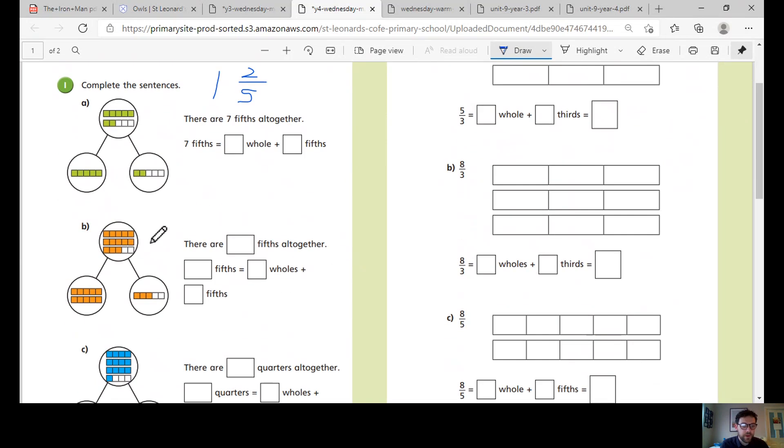Down here. How many fifths have we got? We've got one, two, three, four, five, six, seven, eight, nine, ten, eleven, twelve, thirteen altogether.